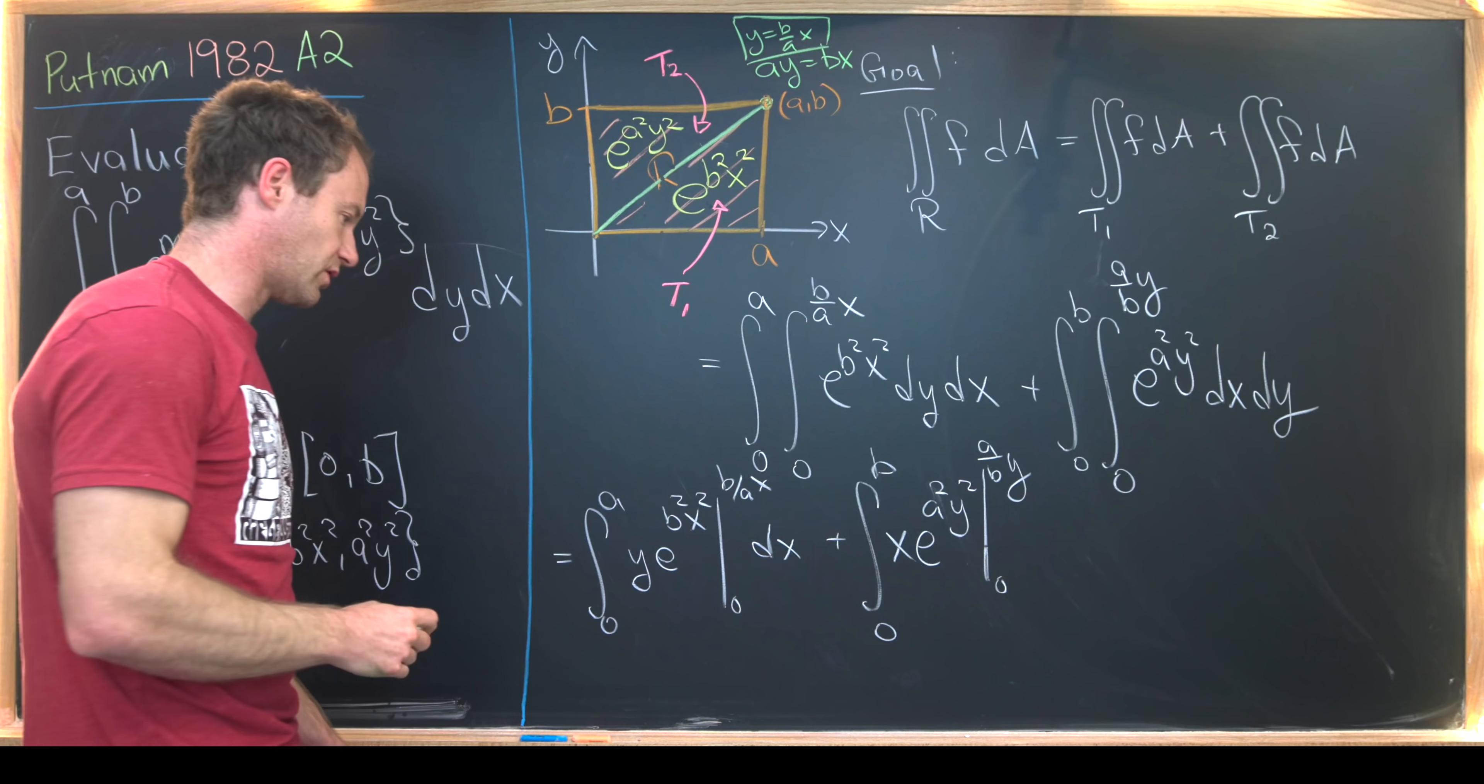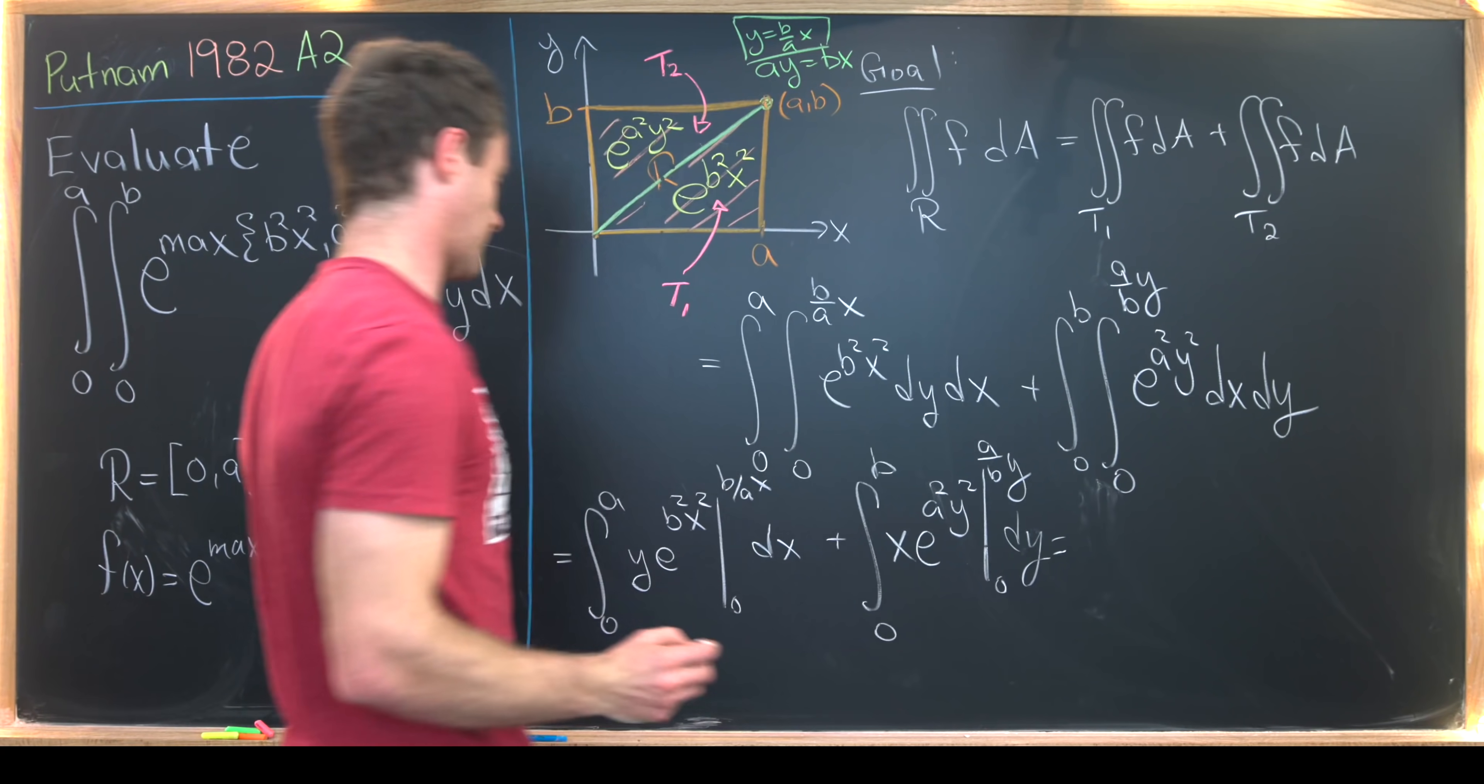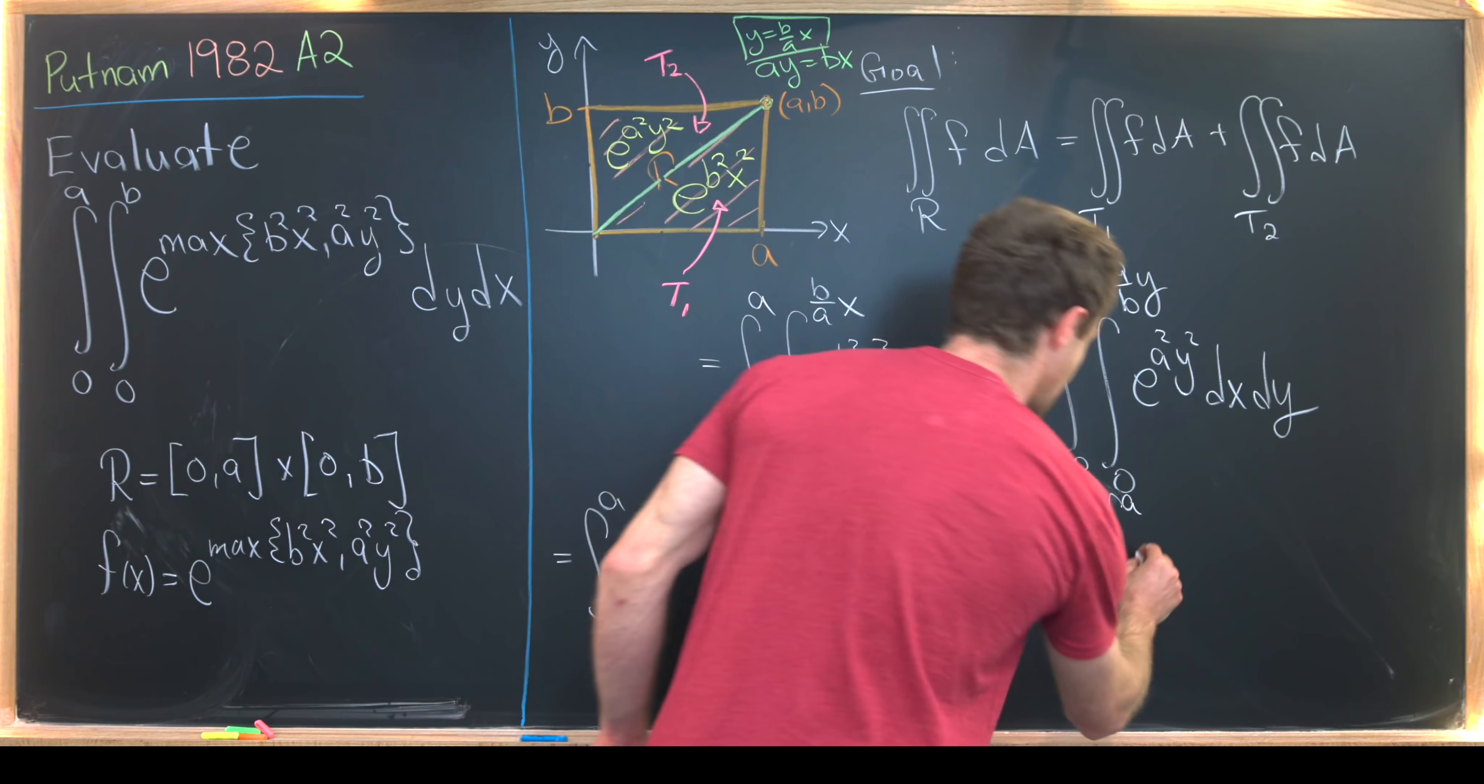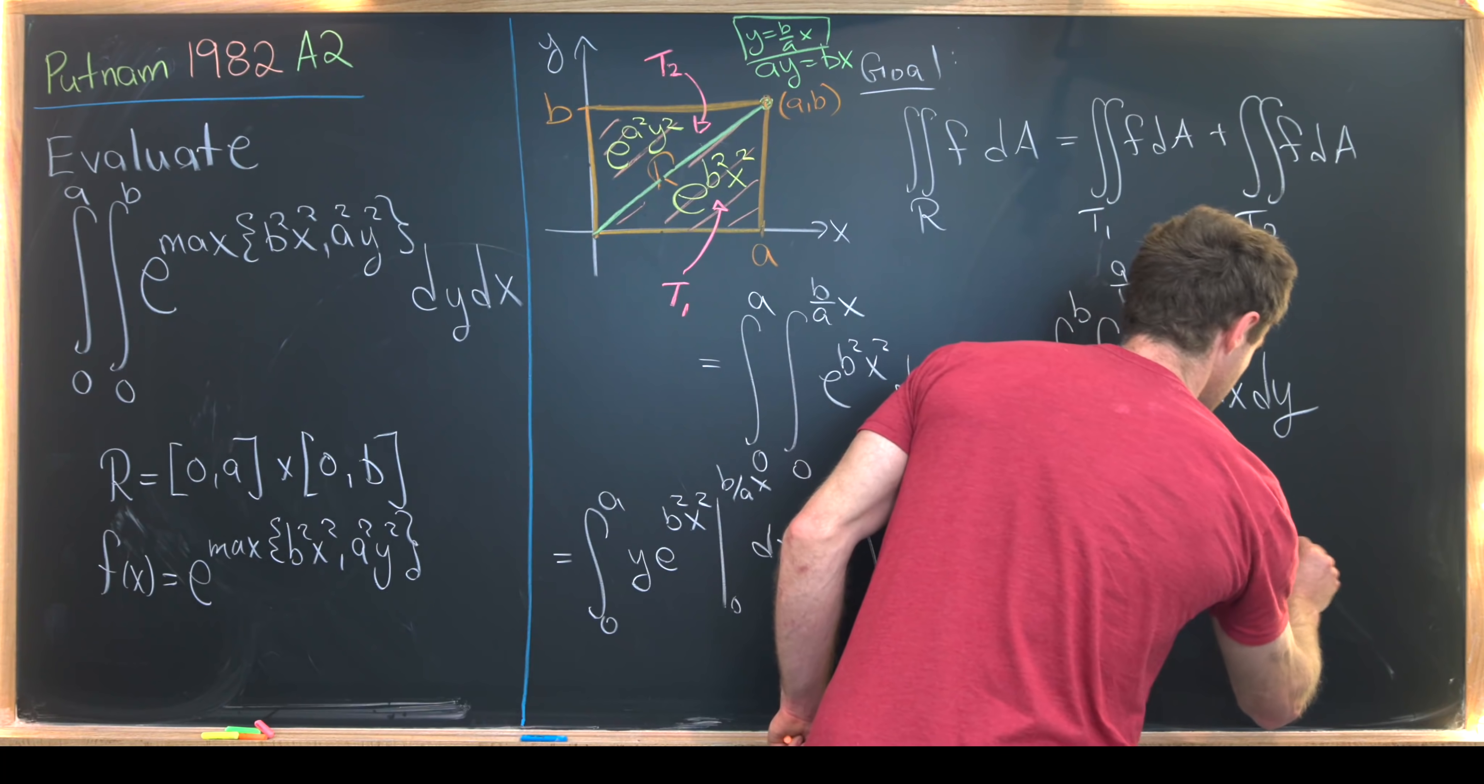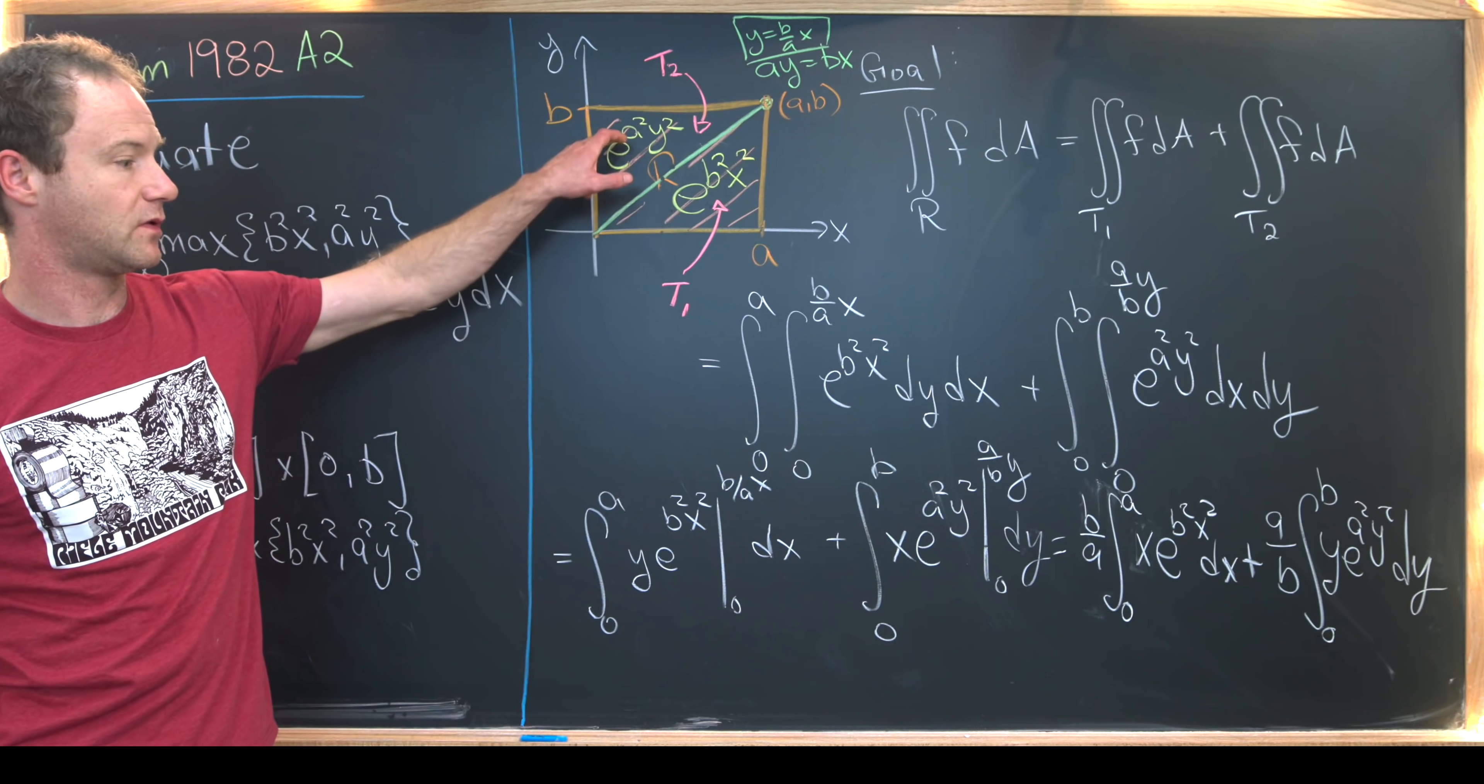So let's see what we get when we plug those in. So plugging zero in obviously just zeroes it out. And then plugging in b over a times x, we're really just multiplies by x, we can take a b over a out front. So that's going to give us b over a times the integral from zero to a of x times x times e to the b squared x squared dx plus a over b times the integral from zero to b of y times e to the a squared y squared dy. Like that. So that would be this bottom one plus this top one.